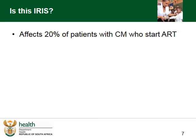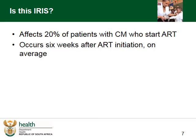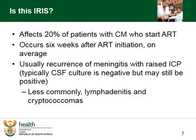IRIS affects 20% of patients with cryptococcal meningitis who start on ARVs. It occurs about six weeks after ART initiation on average, but can be earlier or later. It's usually a recurrence of the meningitis with raised intracranial pressure. Typically we would expect the CSF culture to be negative, but it may even still be positive at this point. Less commonly, there might be a lymphadenitis or a cryptococcal coma as an IRIS phenomenon.